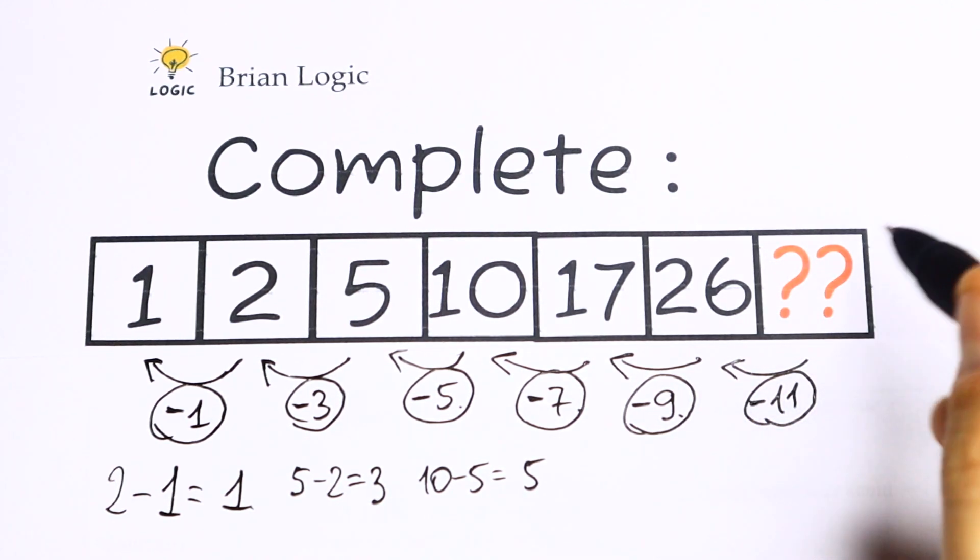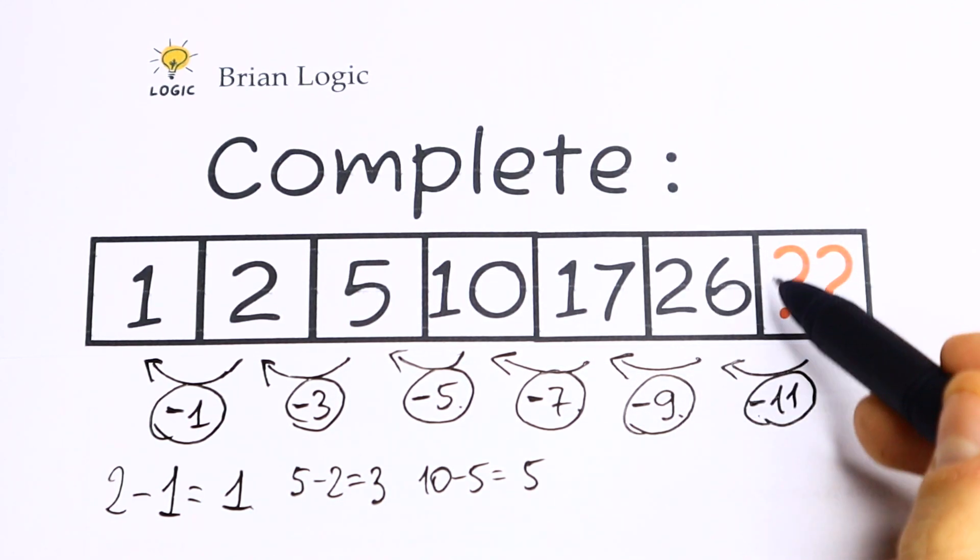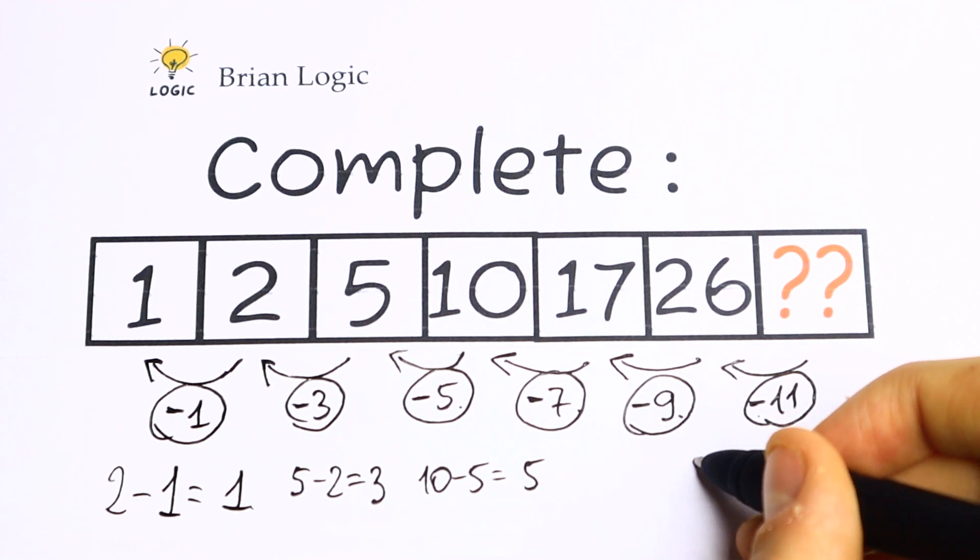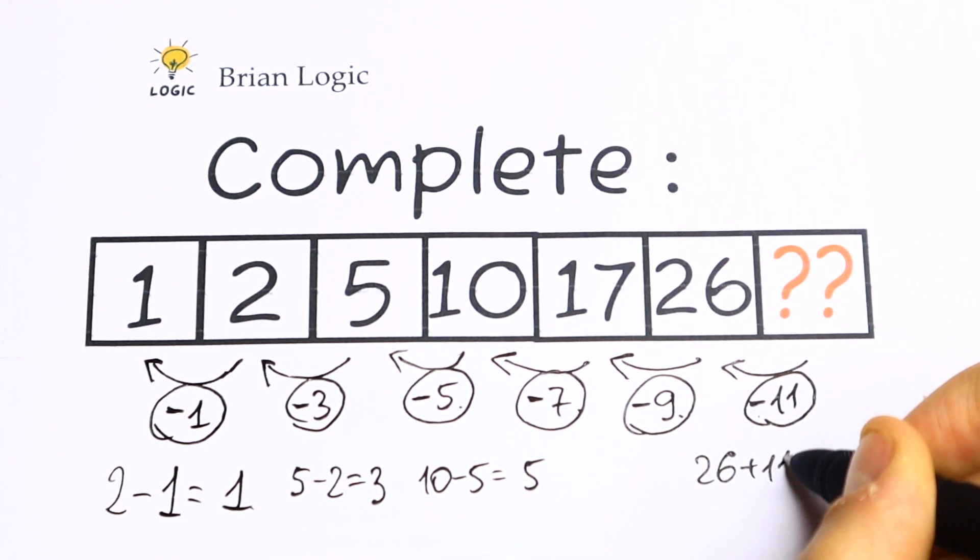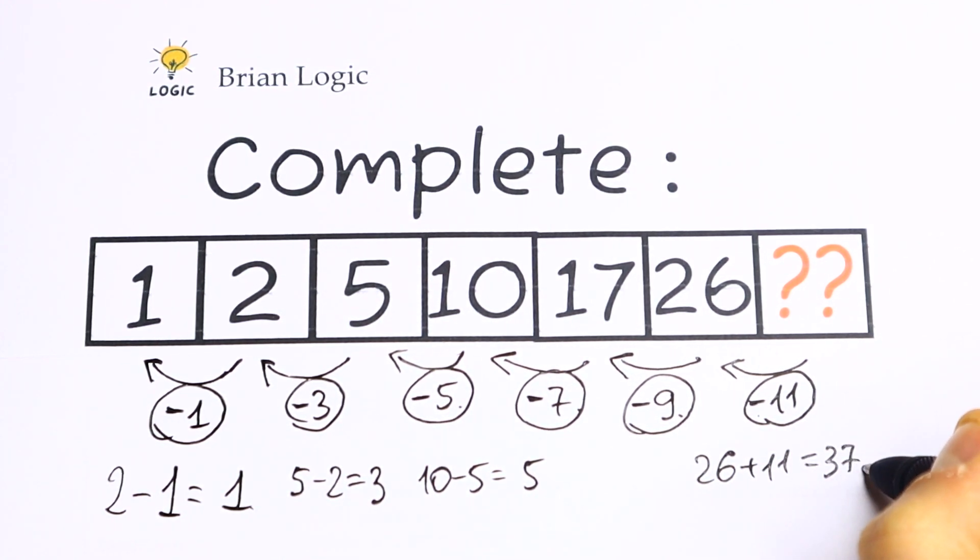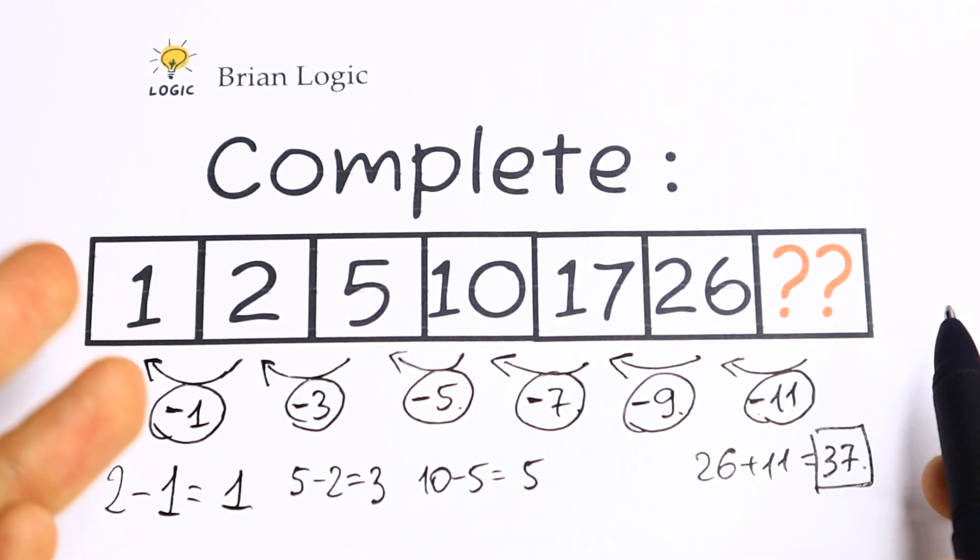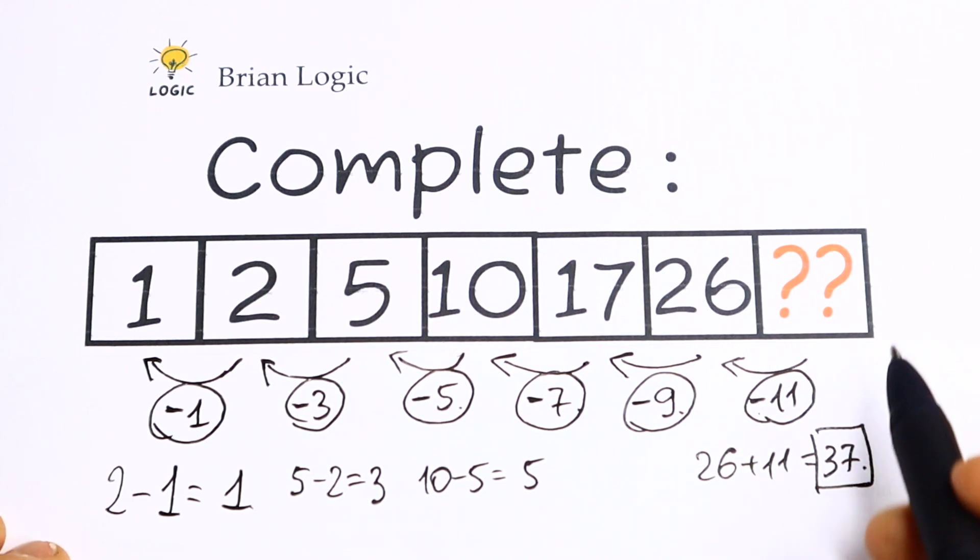So using this logic, we need to add 11 to this number to have the last one. So 26 plus 11, we will have 37. And this will be our last number using this logic. So this is the pattern between all of these numbers.